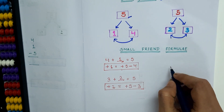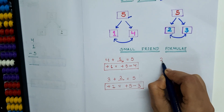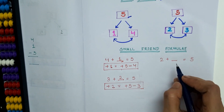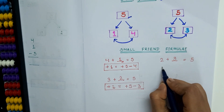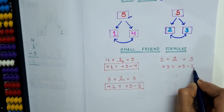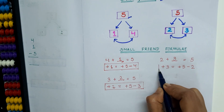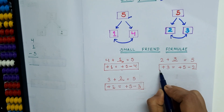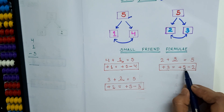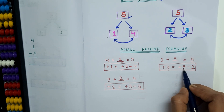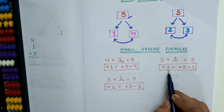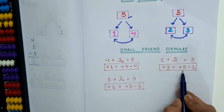Let's see the next one. Tell me, 2 plus how much equals to 5? As we know, 2 plus 3 equals to 5. To get 3, we have to subtract 2 from 5. This is the formula for addition of 3. When we need to add 3, we will add 5 first, then subtract the small friend of 3, that is 2. So the third formula is: plus 3 equals to plus 5 minus 2.